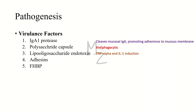The third virulence factor is lipo-oligosaccharide endotoxin. It is responsible for causing the release of cytokines like tumor necrosis factor alpha and interleukin-1. When endotoxin is released, this causes fever, shock, and other pathophysiological changes.